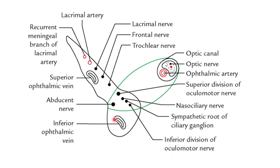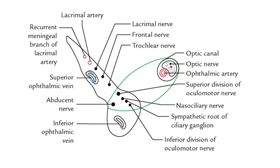Moving on to the structures passing through each compartment of the superior fissure: along the superolateral compartment there is the superior ophthalmic vein, the fourth cranial nerve (trochlear nerve), the lacrimal and frontal branches of the ophthalmic division of the fifth cranial nerve, and the lacrimal artery with its recurrent meningeal branch.